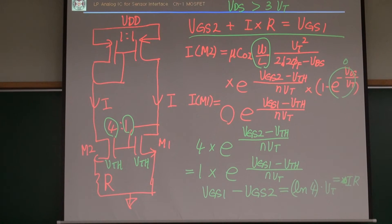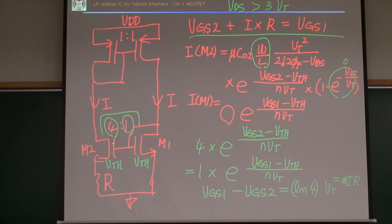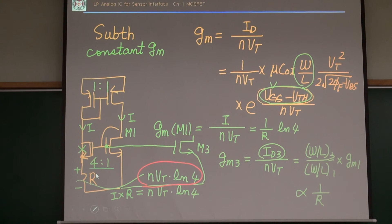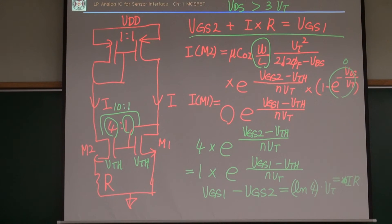Why choose 4:1? In this design we put 4:1 because that's a kind of convention for the strong inversion case — it's very compact and the gm becomes exactly 1/R with no extra constant. For the sub-threshold case, we don't need 4:1; we can make it 10:1, no problem. But the ratio should be larger than one anyway.